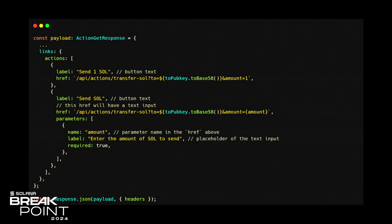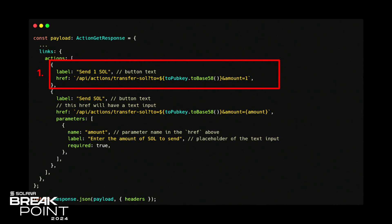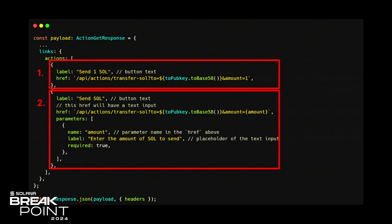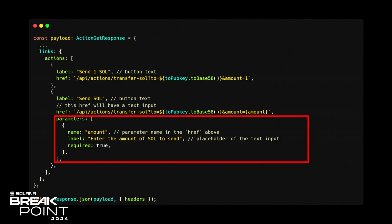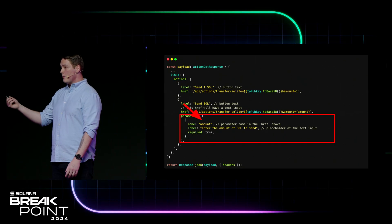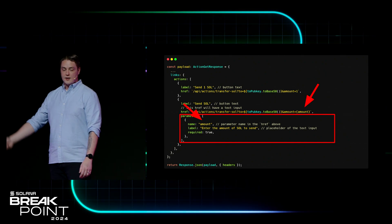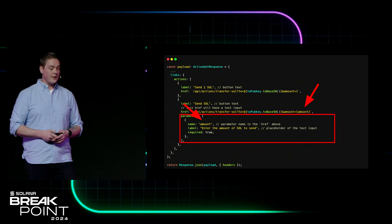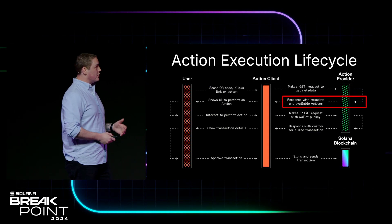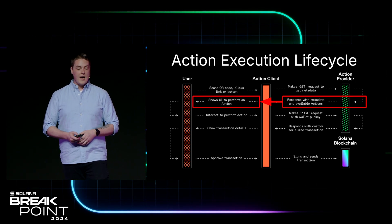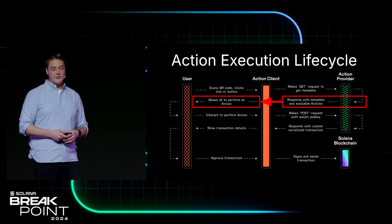This is actual code from an open-source example in the Actions repo. We have two actions. The first one is sending some SOL — you have a label, which is the button displayed for people to click, and an href value, which is just your API endpoint. When the user clicks 'Send 1 SOL,' it makes a POST request to that href endpoint. The second one looks a little more complicated but is basically the same thing — almost the same API endpoint, except we have parameters. With Blinks, you can take user input in the form of parameters. In this case we're doing an amount field, putting it in the query parameter via template literal replacement. You could also do payload data within the body itself. You just return that data — the client side has made the GET request, sent the response back, and the user will be displayed that interface within the Blinks standard experience.